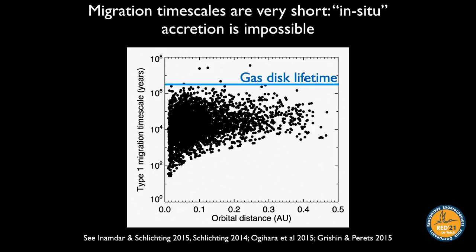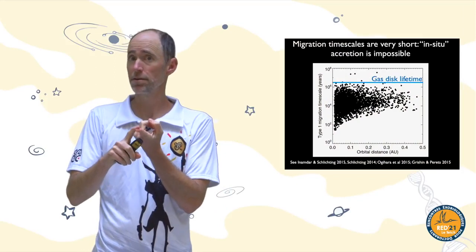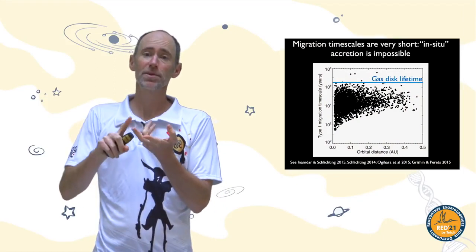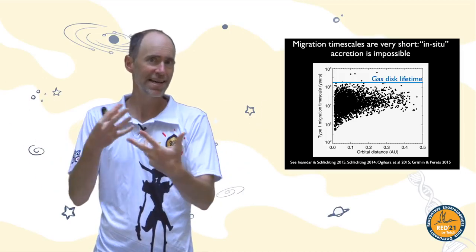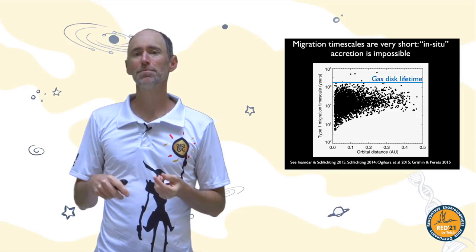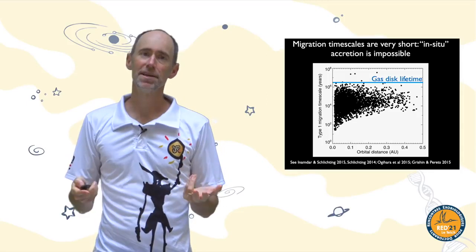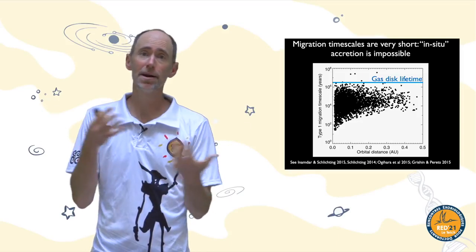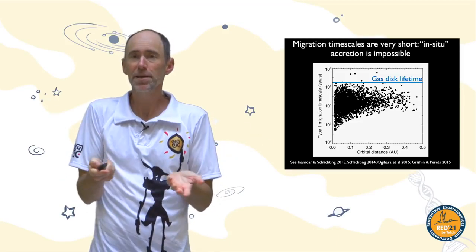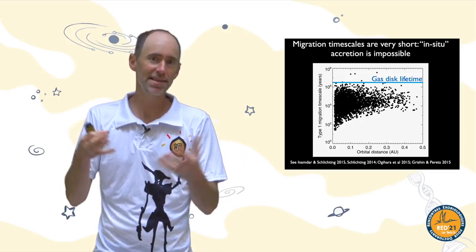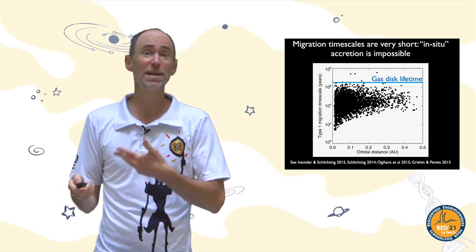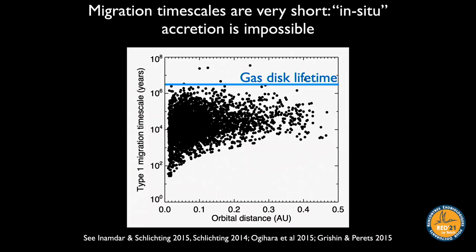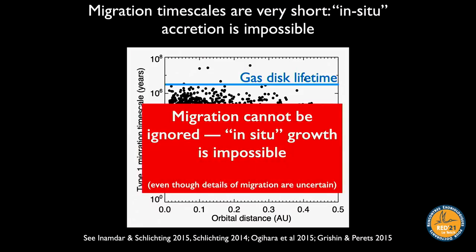If these planets formed where they are, they would form really fast — and this plot shows that with gas still present, they should also migrate really fast. So we can't ignore migration. The idea that planets form in situ without worrying about migration simply cannot make sense: things grow fast, they have to interact with the gas, which means they have to migrate. In-situ growth alone is impossible; migration must be part of the story.